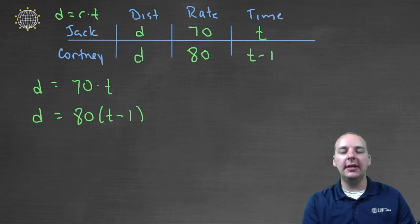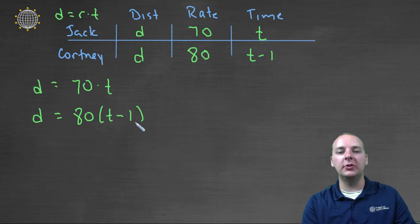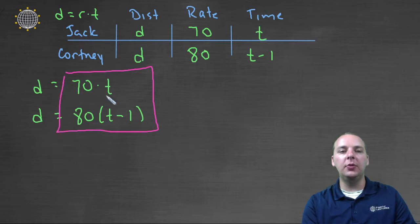And here's the key to the problem that may not be clear, unless you've seen this before, unless somebody's shown you this. For Jack, d equals seventy t, and for Courtney, d equals eighty times t minus one. So since seventy t is distance, and eighty t minus one is distance, would it not be fair to set each of these two equal to each other?